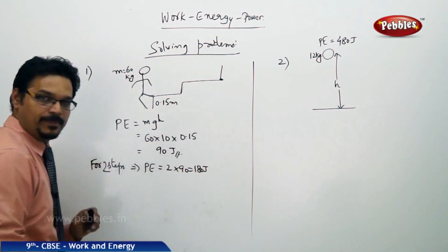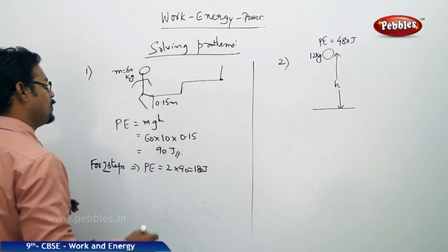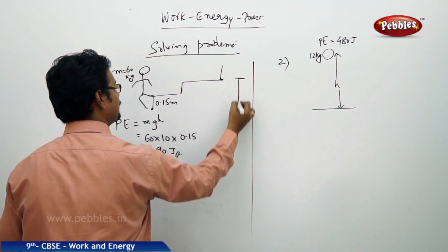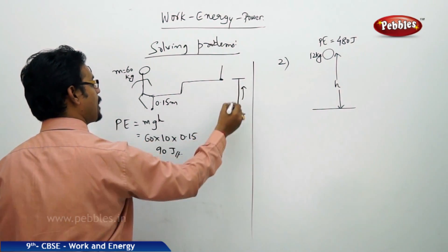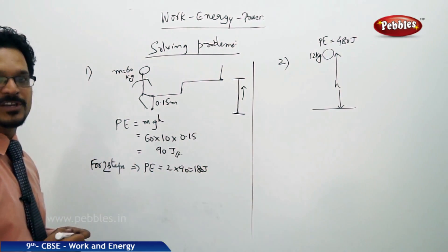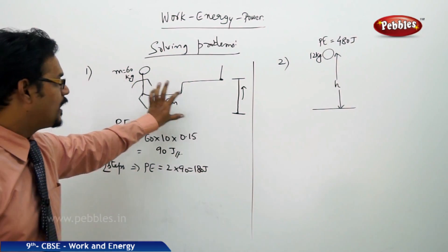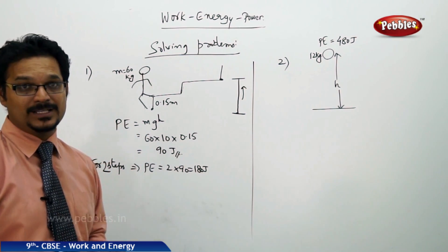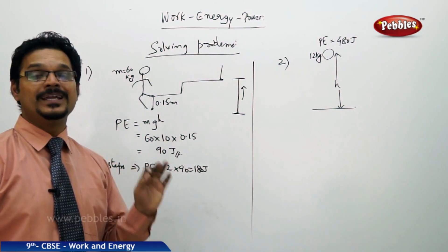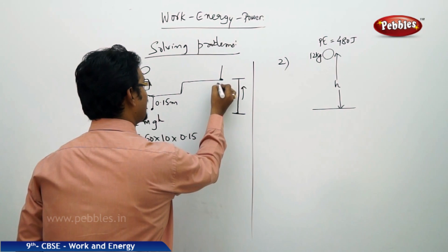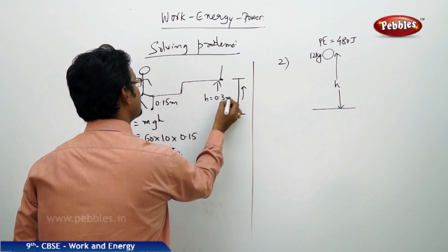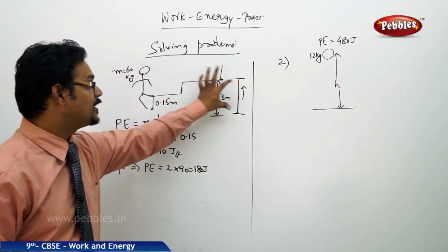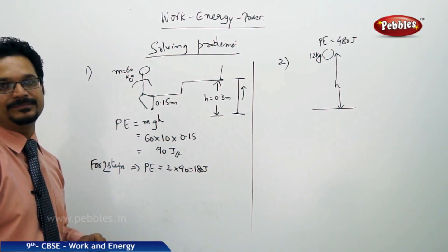One important thing to tell you: suppose he is going upward in the steps, but in another case he went directly up. In both the cases, in which case you have more potential energy? The answer is both cases you have the same potential energy because potential energy doesn't depend upon the path, how you have traveled. It depends upon the height only. In both cases the height is 0.3 meters only.